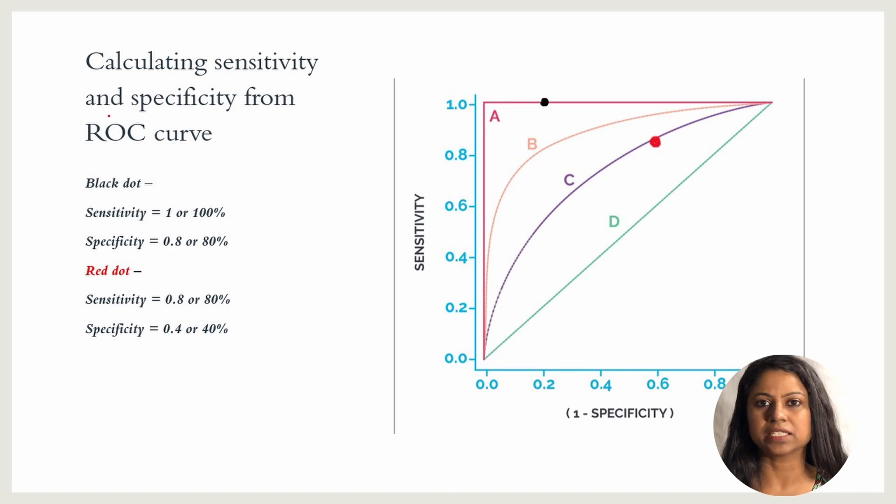Let's calculate the sensitivity and specificity of two points on the ROC curves. At the black dot, the sensitivity is 100%, while the specificity is 80%. At the red dot, the sensitivity is 80% and the specificity is only 40%.